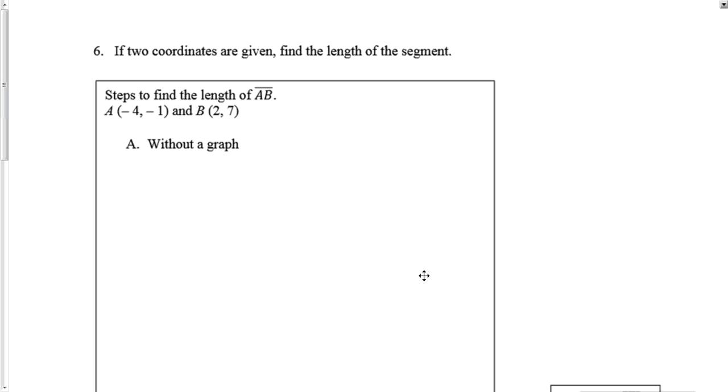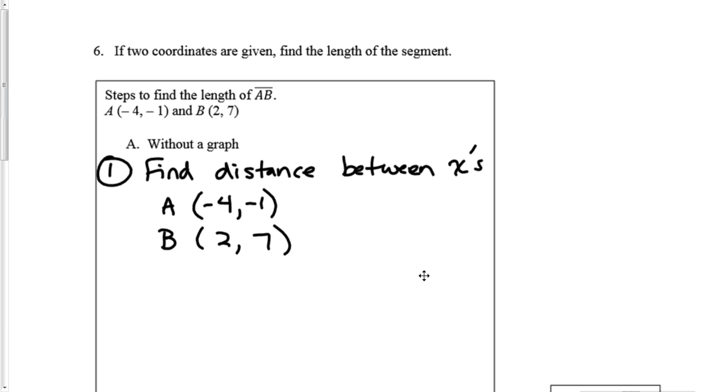So all we're going to do is the same basic idea. The first step is we need to find the distance between the x's. How far apart are the x values? To do that, we are going to look at our coordinates. Point A is at (-4, -1), and point B is at (2, 7). So what I'm really looking at for the distance between the x's is how far apart are 2 and -4.